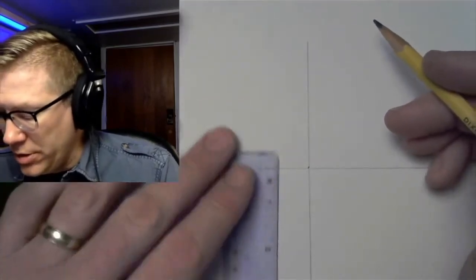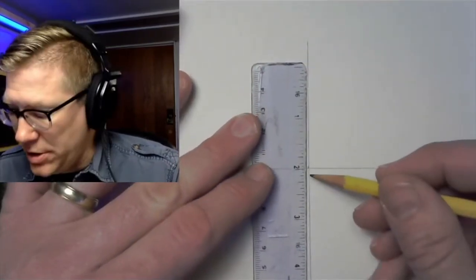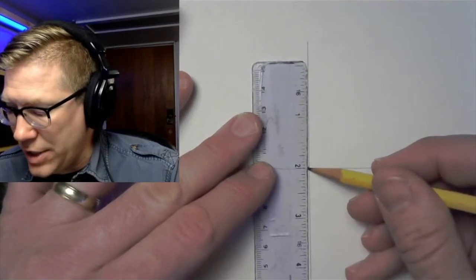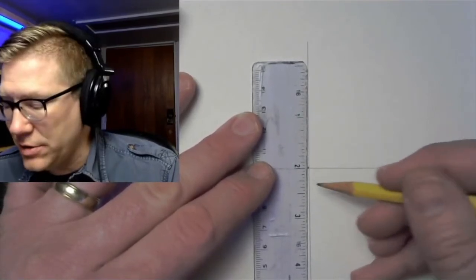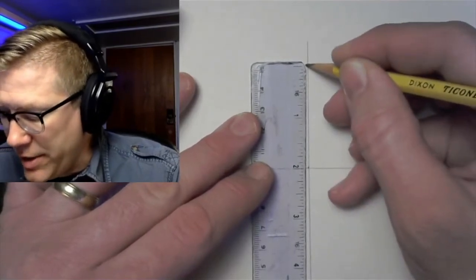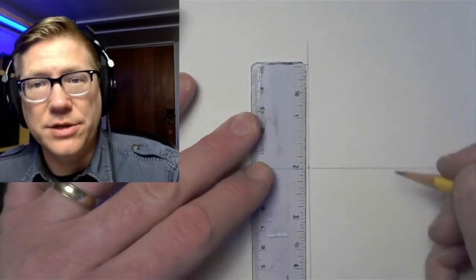So I'm going to take my ruler and I'm going to put the two inch mark here right at the origin, right at the point where the x and y, the horizontal and vertical lines cross and I'm going to make a mark here at the zero mark on my ruler.